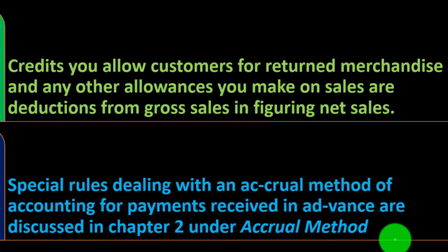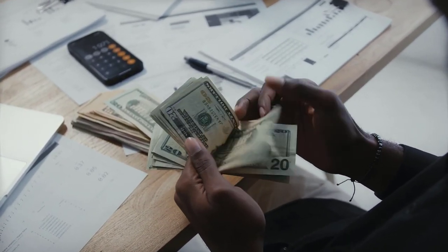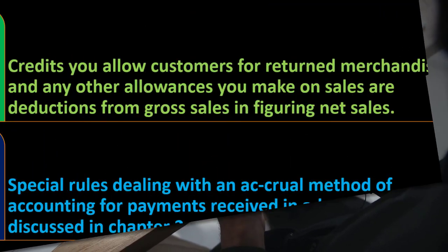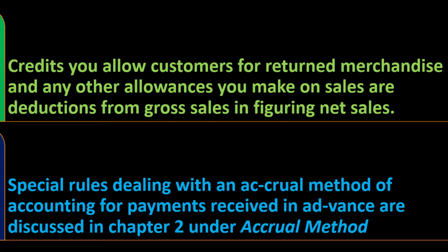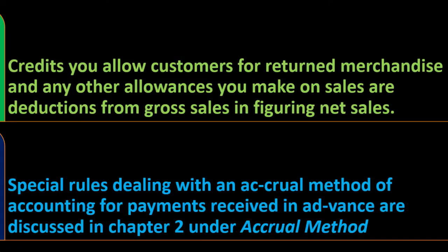Sales returns and allowances: credits you allow customers for returned merchandise and any other allowances you make on sales are deductions from gross sales when figuring net sales. If a customer returns merchandise, the sale is effectively reversed. On the books, this appears as a contra sales item — sales returns and allowances — which acts like an expense but is really reducing the original sales amount.